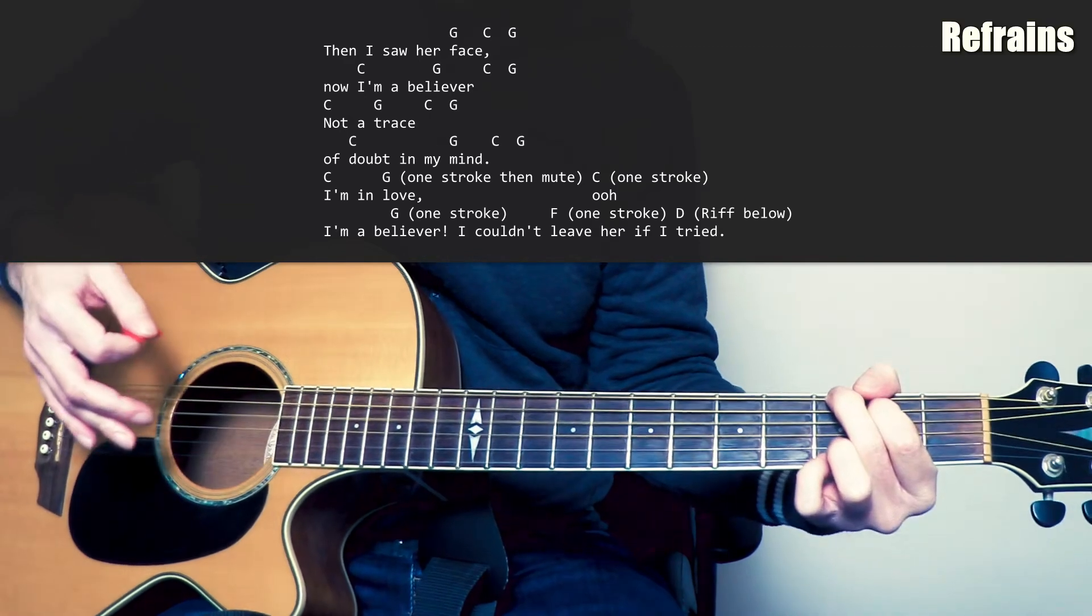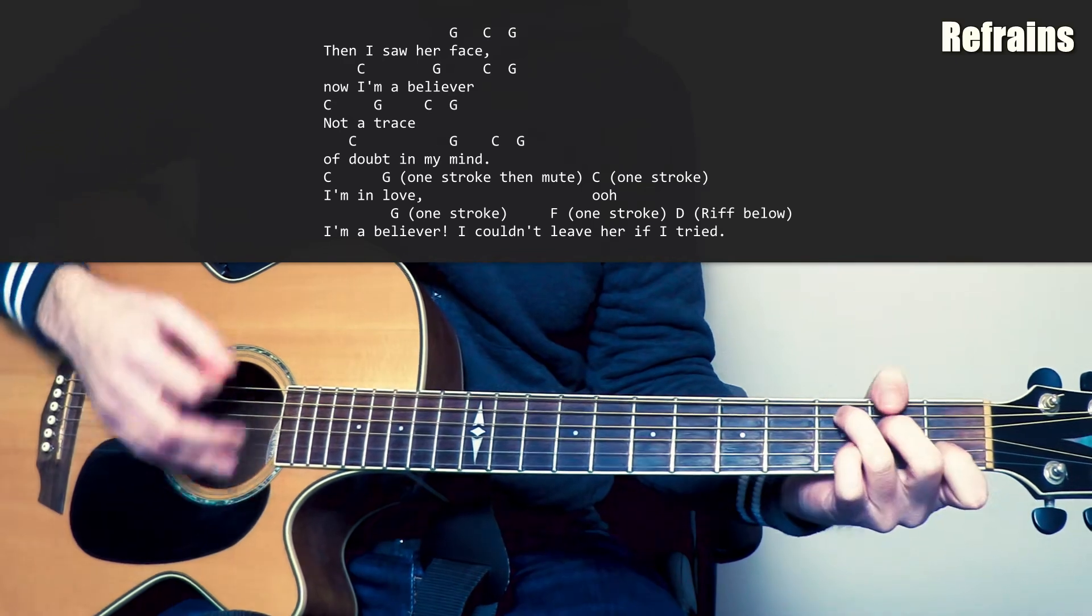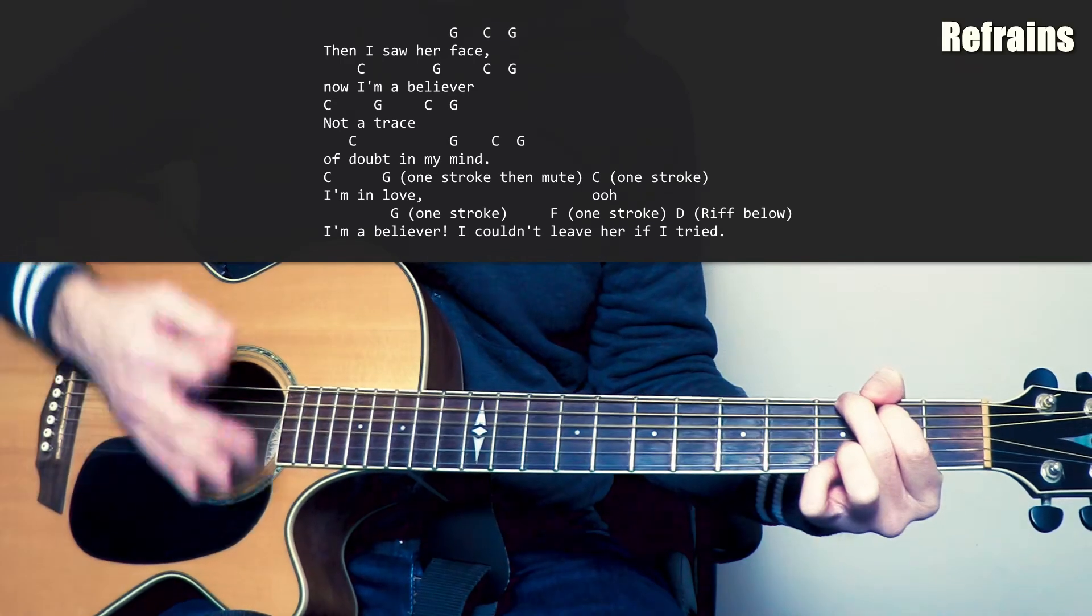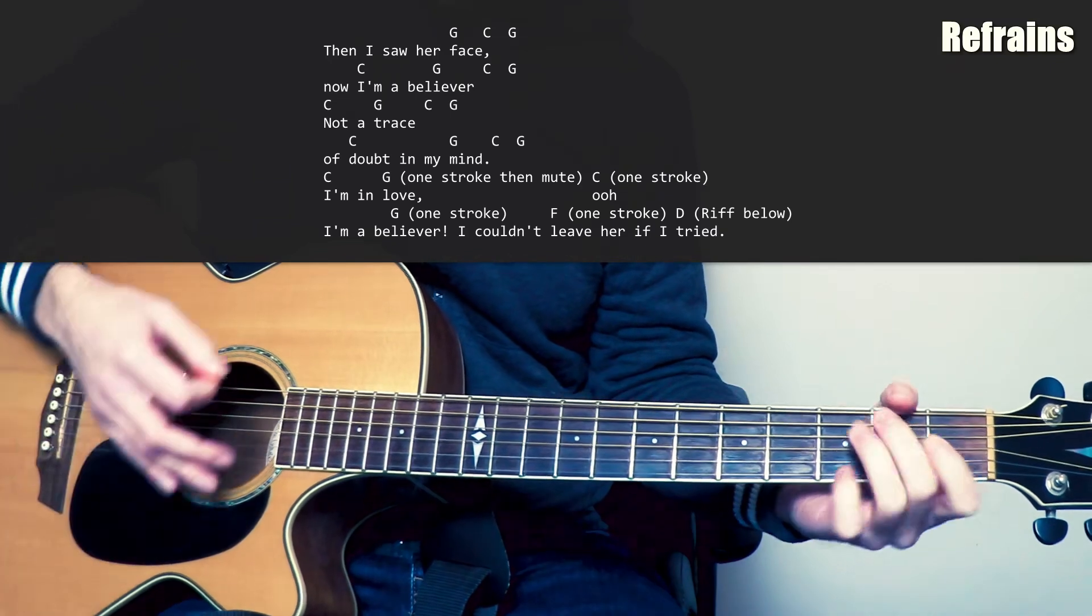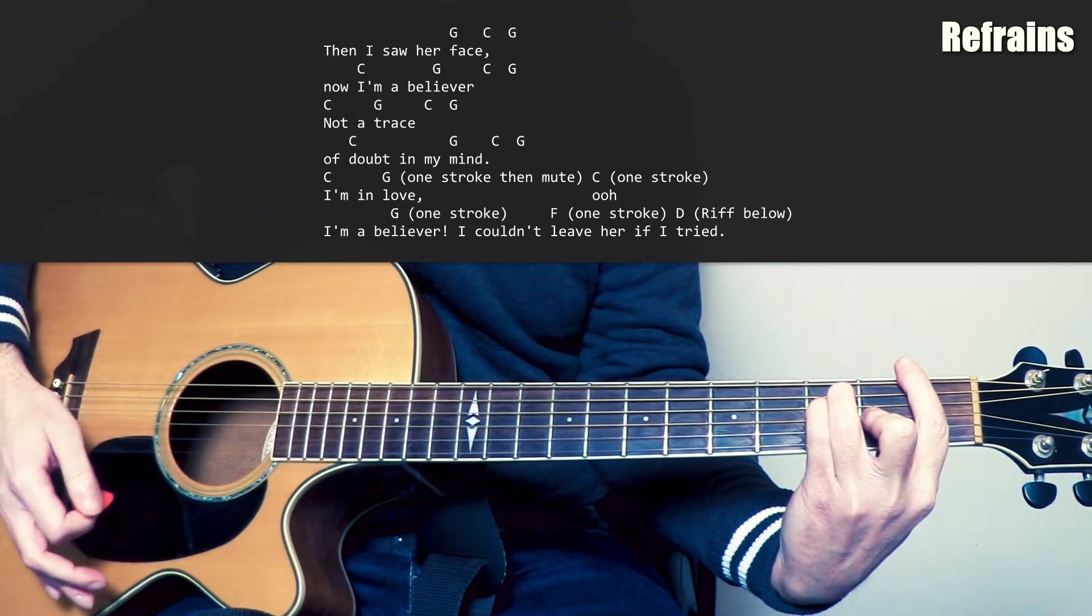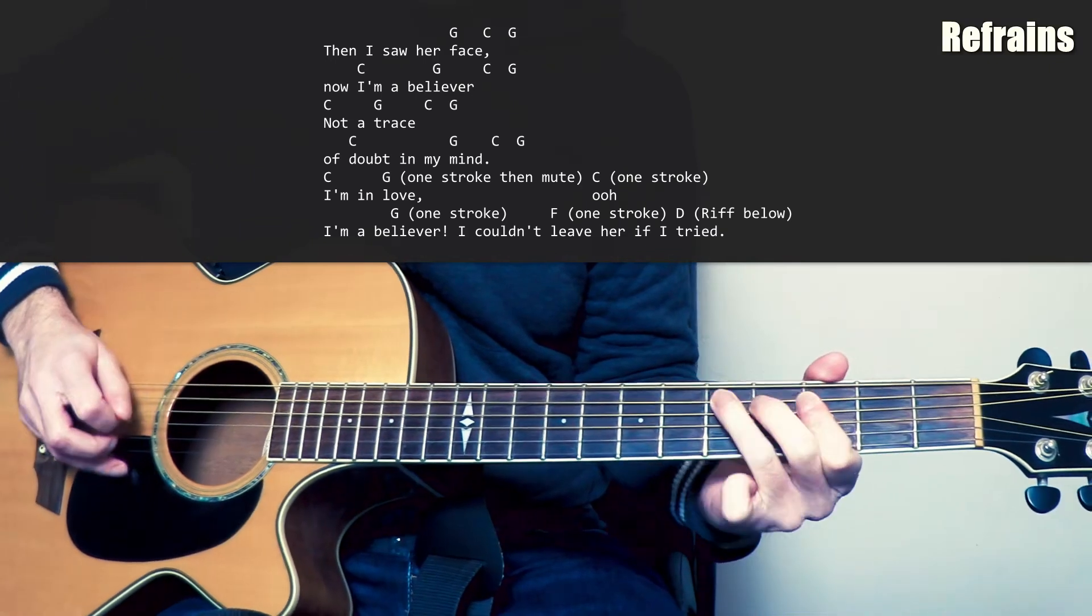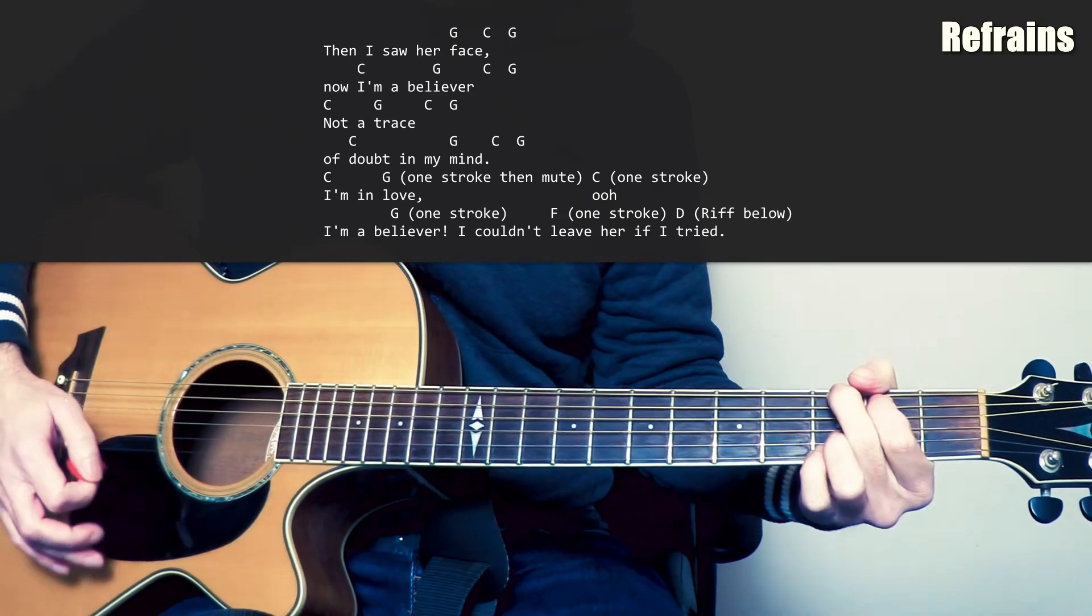Et on va faire juste un coup, quand on arrive à "mean man", on fait un coup et on étouffe le son. Ensuite, un Do sur un seul coup également: "I'm a believer". Pareil, un seul coup: "I couldn't leave". Comme je disais, le Fa, un seul coup. Et notre Ré.